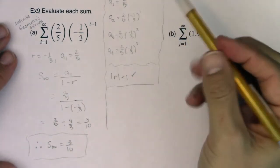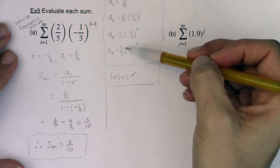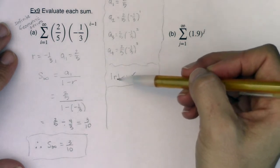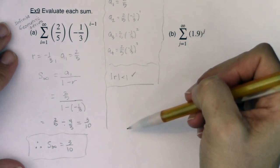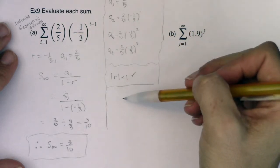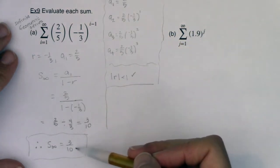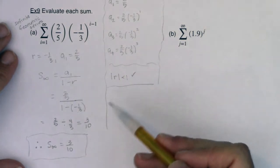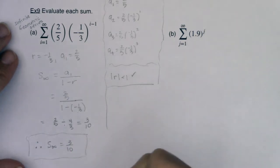S sub infinity equals 3/10. It seems a little funky, but if I added the terms of this sequence forever — a sub 5, a sub 6, a sub million, a sub billion — all of those terms are bounded by the number 3/10. It's kind of crazy: you can add an infinite number of terms and it's capped. It doesn't blow up to infinity; that sum is just 3/10.